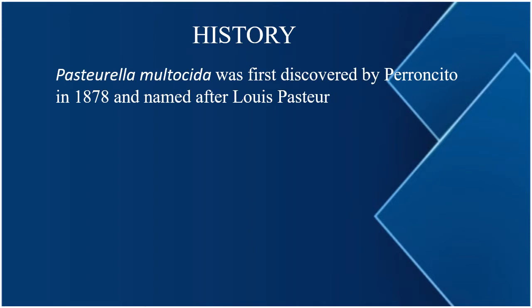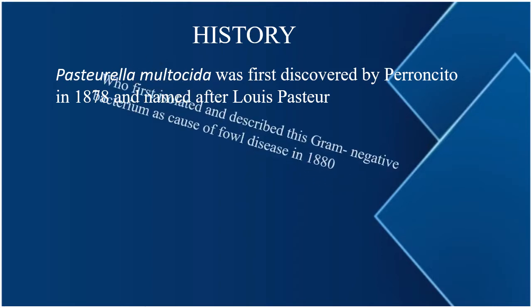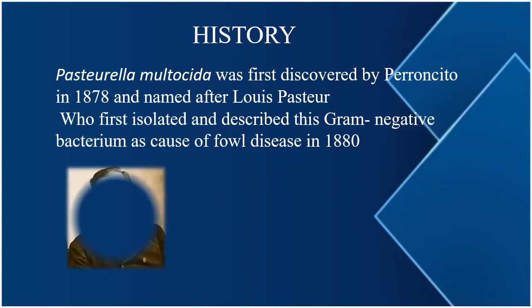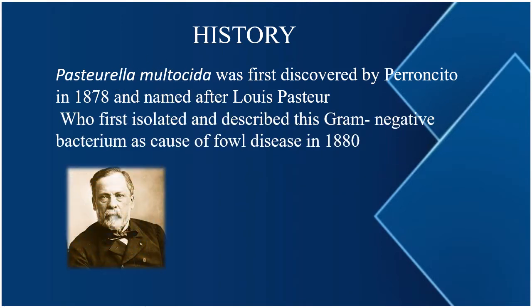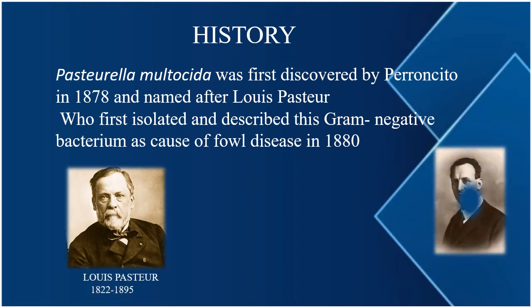Now, let's come to the history of it. Pasteurella multocida was first discovered by Perenceto in 1878. After two years in 1880, or in some books mentioned as after four years, Louis Pasteur identified this disease. He isolated and described this gram-negative bacterium as the cause of fowl cholera disease.